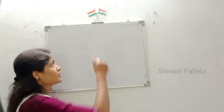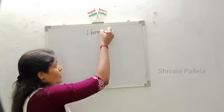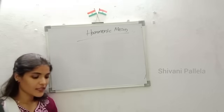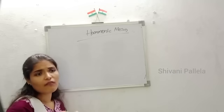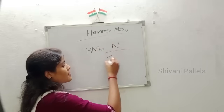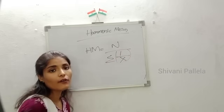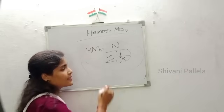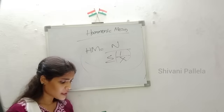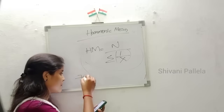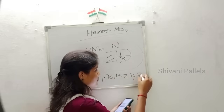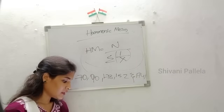Concurrent deviation covers four marks in Part A. Now we will discuss harmonic mean. The formula for harmonic mean is HM = N divided by sigma (1/X). We will now apply this formula to an example question. X values given are: 70, 90, 178, 152, and 174. We need to find the harmonic mean.